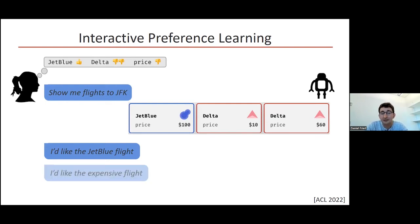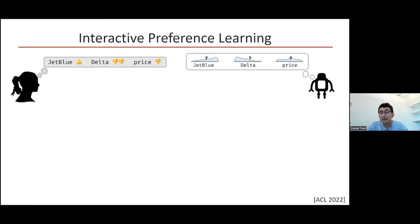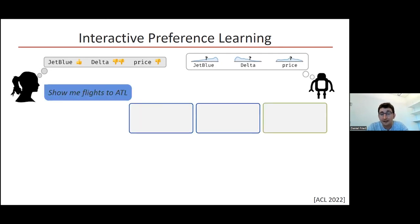Since they didn't say I'd like the expensive flight, we can figure that this carrier is possibly a more important feature to them, and update our posterior over their preferences based on what they said. And then use that to act on behalf of the person in better ways in other settings, giving things that are more relevant to them and what they're interested in.